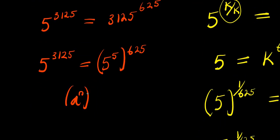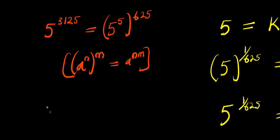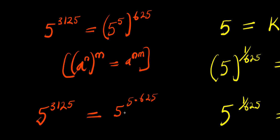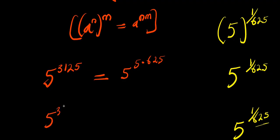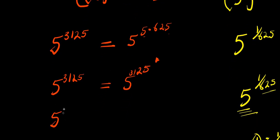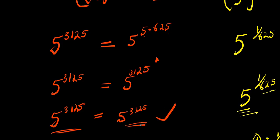Now, 31/5 is simply 5 to the power 5, and this is raised to the power 6/5. Using the rule a to the power n, raised to the power n, equals a to the power n times n, I have 5 to the power 31/5 equals 5 to the power 5 times 6/5. That is 5 times 6 over 5, which gives 5 times 2 equals 10, plus 2 gives 12... simplifying: 5 times 6 is 30, plus 1 is 31, so 5 to the power 31/5 equals 5 to the power 31/5. The left-hand side and right-hand side are the same, confirming our answer is correct.